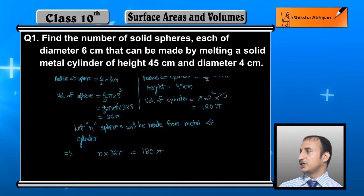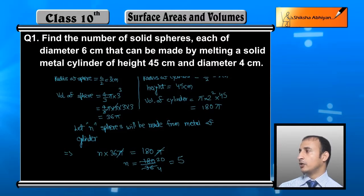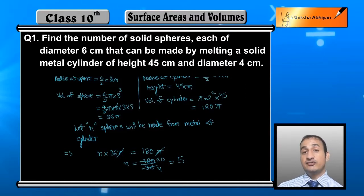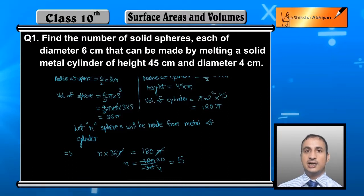Pi cancels with pi, so 180 upon 36 is the value of n. Dividing completely: 180 divided by 36 equals 5. So we will get a total of 5 spheres. This is the answer.